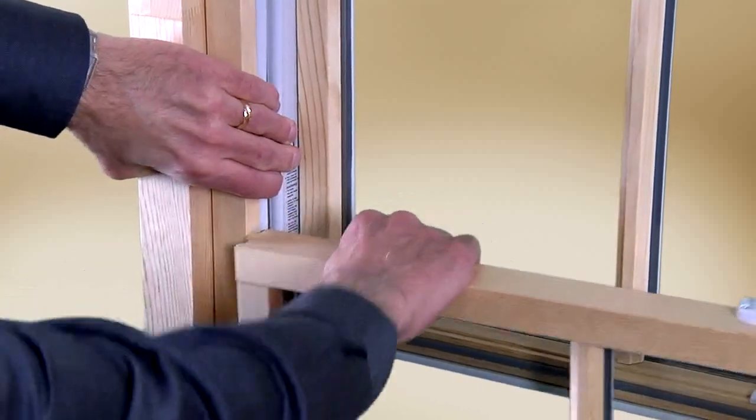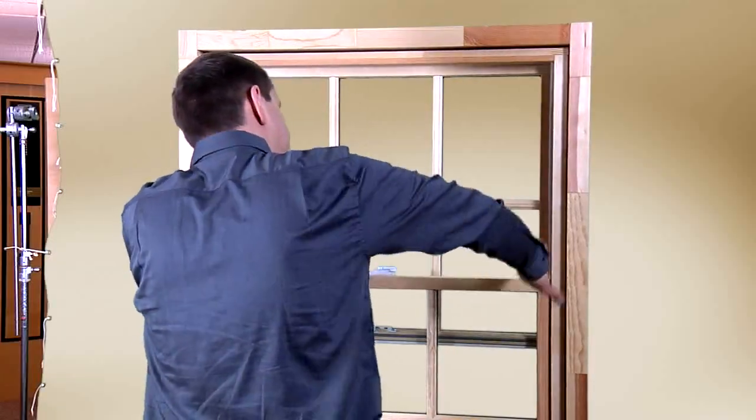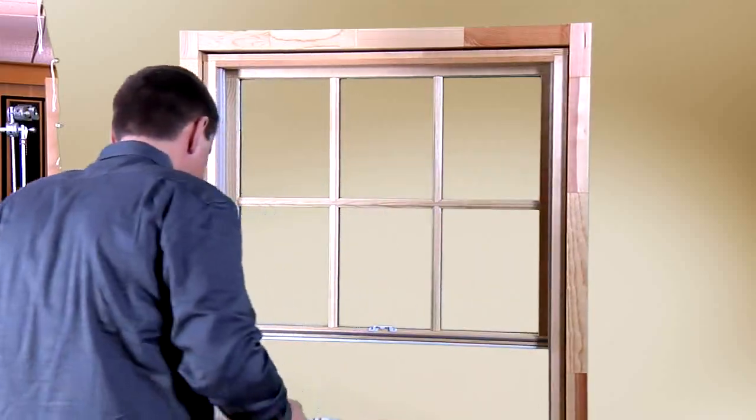Depress the flexible jam liner with one hand and pull the sash toward you with the other. Repeat the process on the other side.